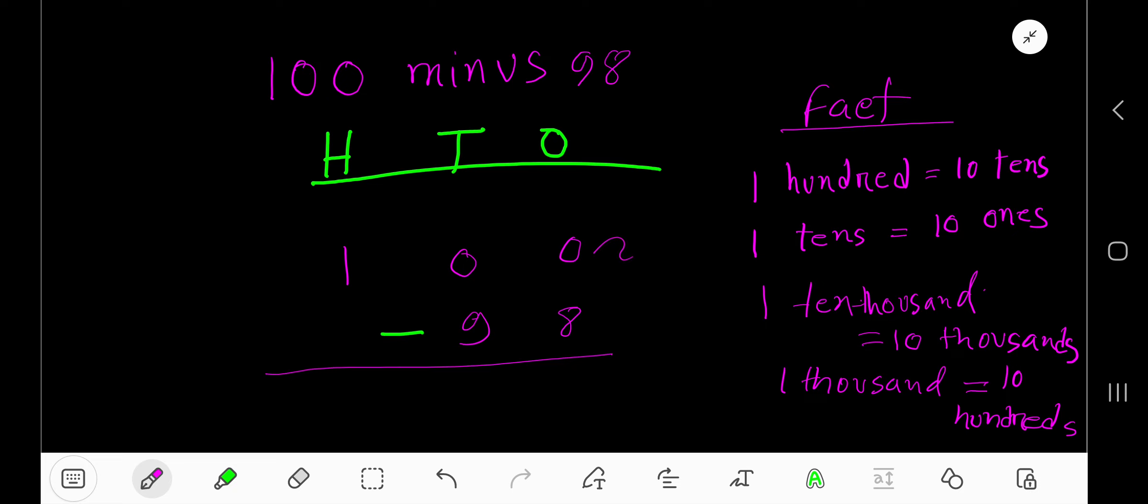You can't subtract from 0, so you need to borrow. Go to the next column—this is a 0. Go to the next column—this is 100.